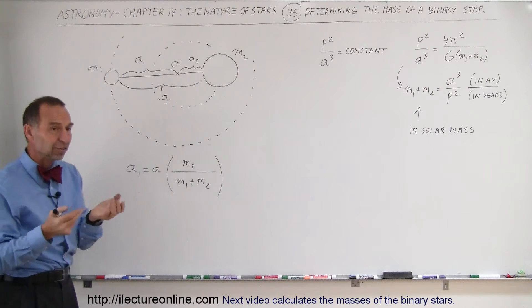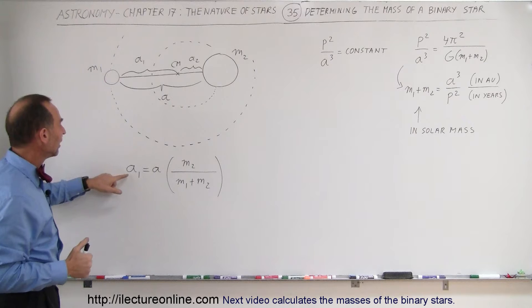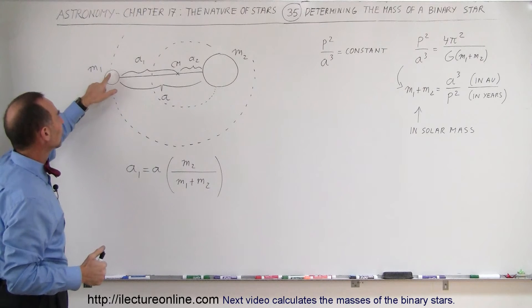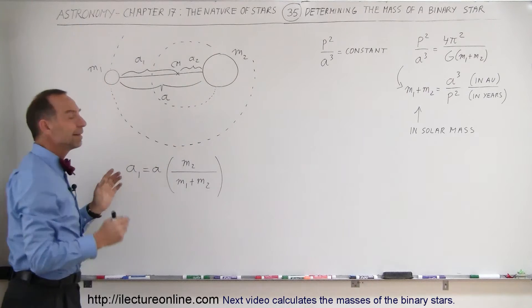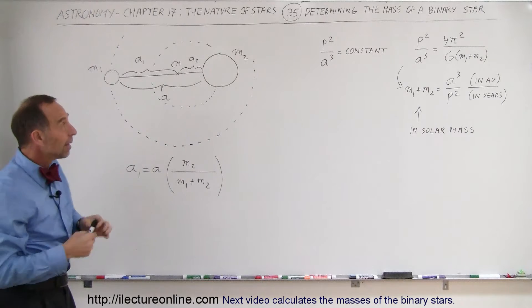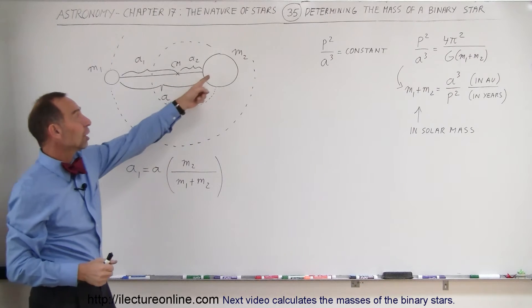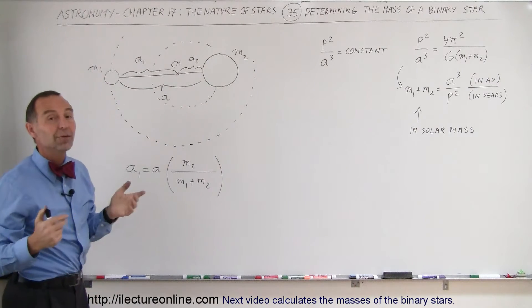What we can say is, based upon the laws of physics and the center of mass and the mass of the objects, that A1, the distance from the small star to the center of mass, is equal to the total distance A times the ratio of the mass of the other star divided by the sum of the two masses. That makes sense because the larger the other star is, the farther that the small star will be away from the center of mass.